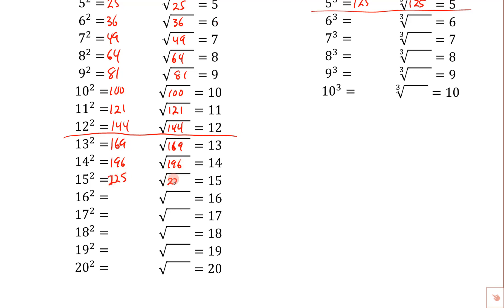16 squared is 256, and the square root of 256 then would be 16. Let's see, 17 squared is 289, so the square root of 289 would be 17.